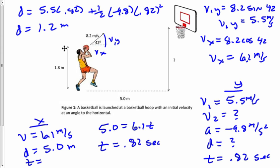That means the ball has gone 1.2 meters upwards from our original 1.8. To get the height of the basketball hoop, we take 1.8 plus 1.2 to give us 3.0 meters.